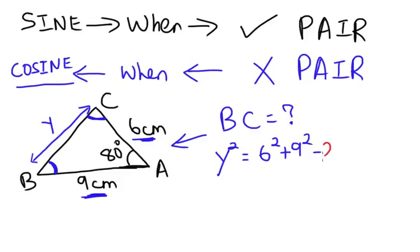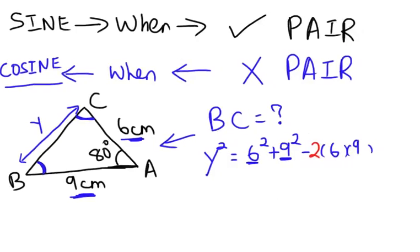Remember, minus 2 times 2 things, which is the length that we have, which is 6 and 9. So minus 2 times 6 times 9. Let's move to the right a little bit so that we have more space. And then cos, because it's cosine rule, always remember, must cos. Cos the angle opposite the y. Opposite the y, what is the angle? 80 degrees. So we will put cos 80 degrees.